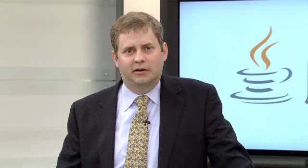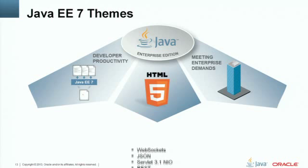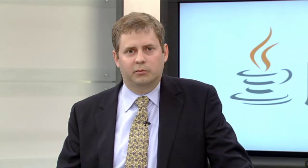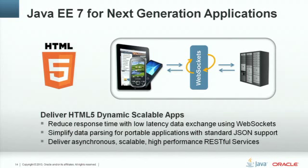Let's take a look at what's actually in Java EE 7. We had three major themes. First, for HTML5, we're introducing support for two new standards. The first is WebSockets — we now have WebSocket APIs in Java EE 7 that allow clients and servers to communicate asynchronously with each other. Secondly, we're introducing support for JSON in Java EE 7. And lastly, we're creating an asynchronous RESTful support that allows much higher scalability for REST-based applications.